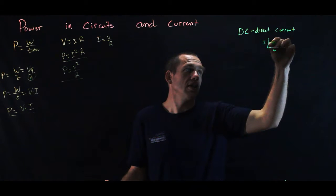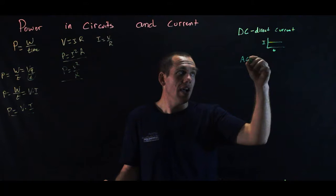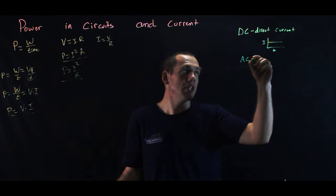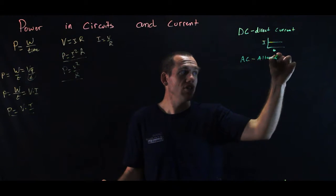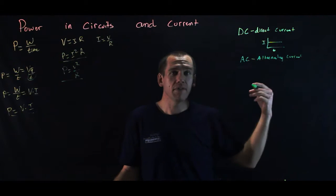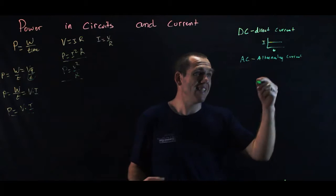So if we had a current versus time graph, it would just look like this horizontal line. However, in the United States, most countries, we don't have direct current in our wall sockets. It's alternating current, AC. And it's called that because it actually alternates direction. It moves back and forth. First current flows one direction, then it flows the other direction.